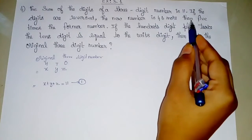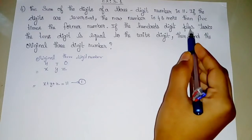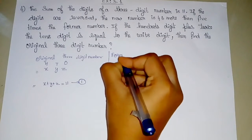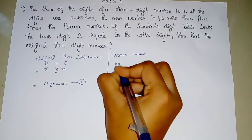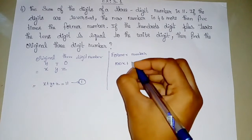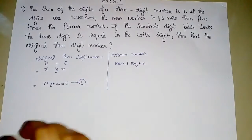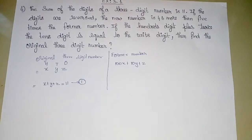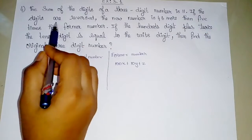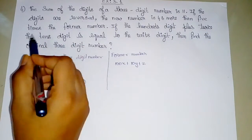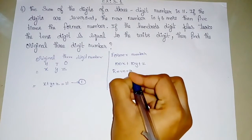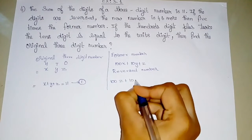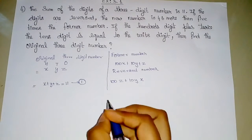Next: if the digits are reversed, the new number is 46 more than 5 times the former number. Also, the 100th digit plus twice the 10th digit is equal to the unit digit. The former number is 100X plus 10Y plus Z. When reversed, the number becomes 100Z plus 10Y plus X.